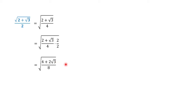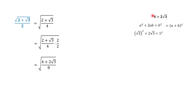Let us say that 4 plus 2 square root of 3 is a perfect square. Remember that the form a squared plus 2ab plus b squared is a perfect square, and if we factor this, we have the squared quantity of a plus b. So if we follow this form, we can say that 4 plus 2 square root of 3 has 2ab equal to 2 square root of 3, so a would be square root of 3 and b is 1.